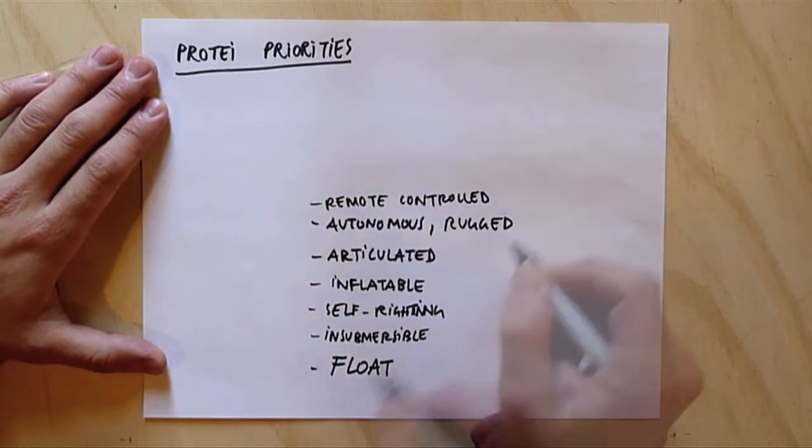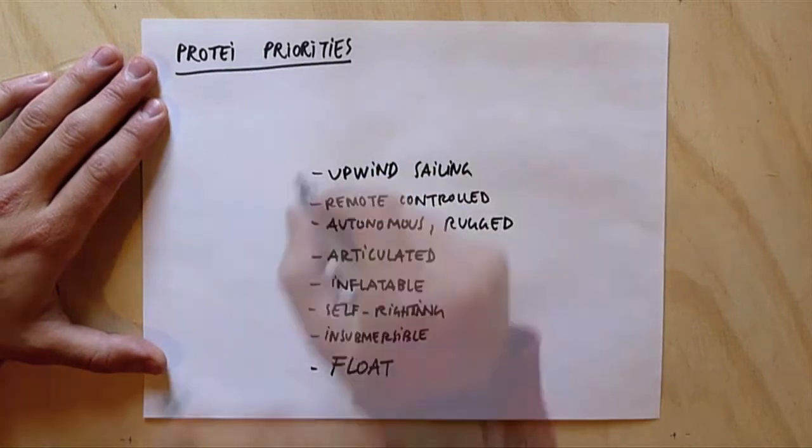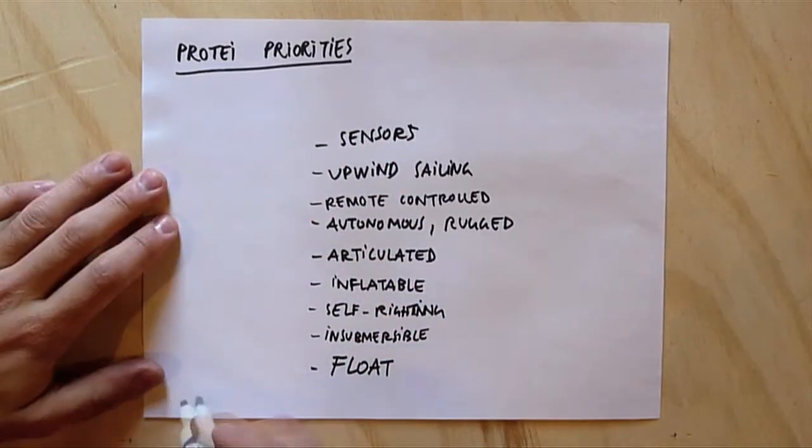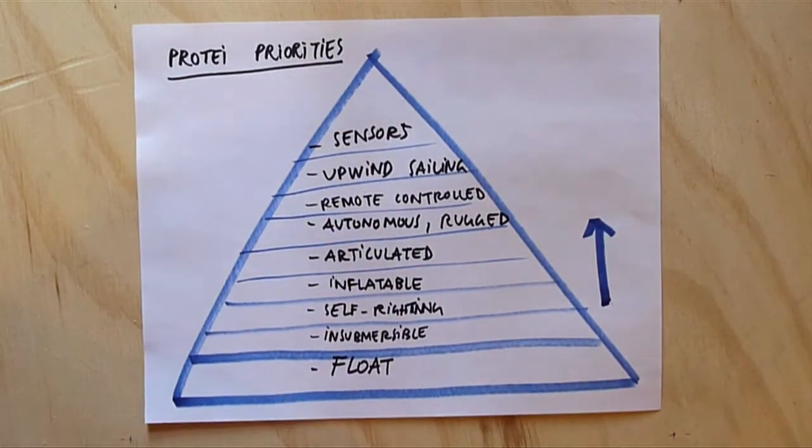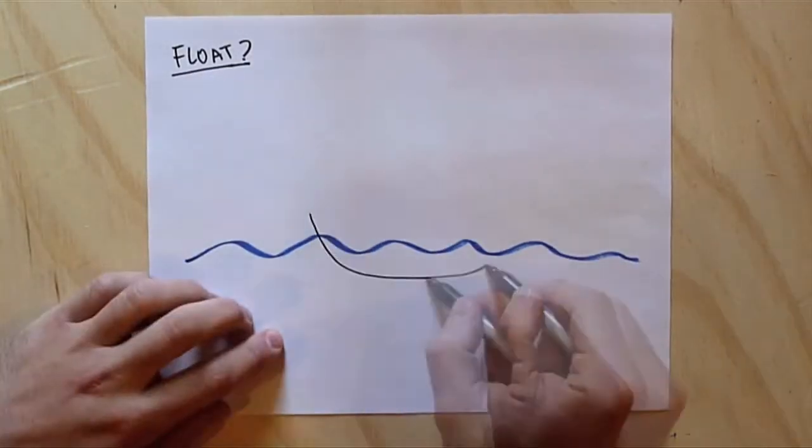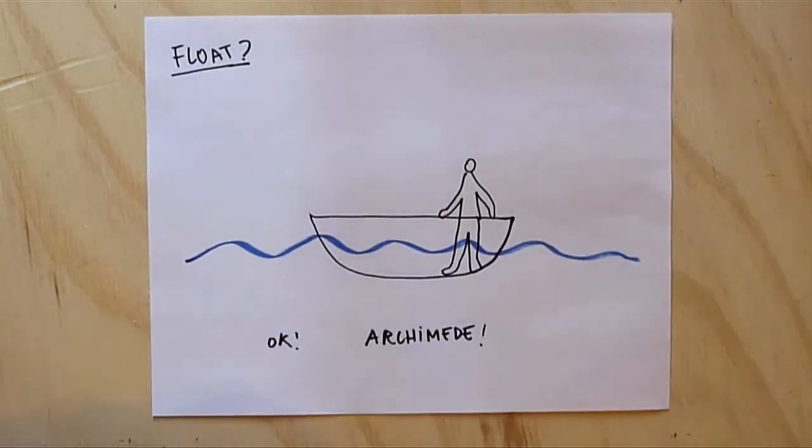So these are the properties we want Pro-Type number 6 to have. We're also fundraising now to buy parts. So the priorities are in this order, from bottom to top. We're trying to solve one problem at a time. So first we want it to float. That's pretty straightforward. It needs to be like a buoy, if you like.